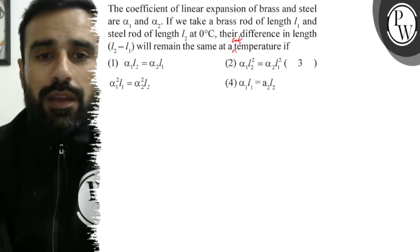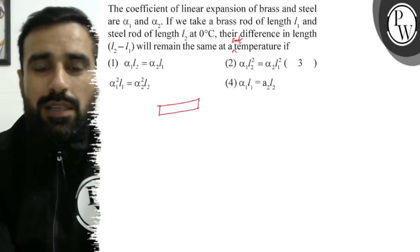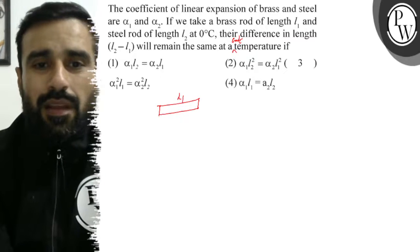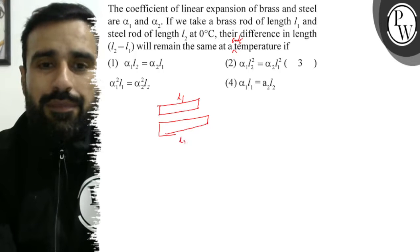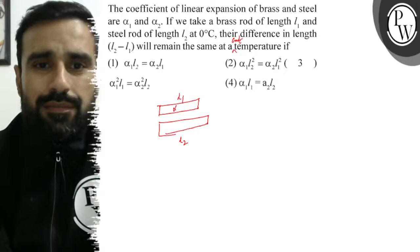So we have taken brass of length L1 and steel of length L2. Their coefficients of expansion are given as alpha 1 and alpha 2.